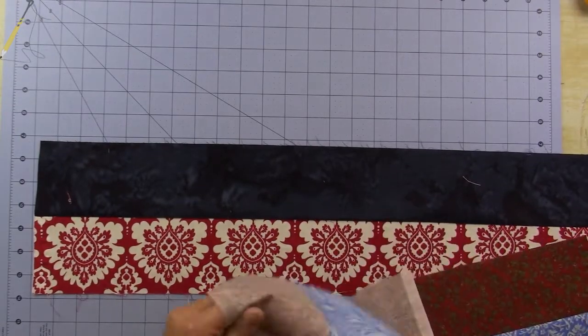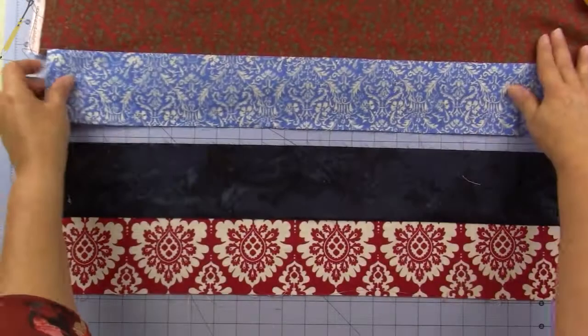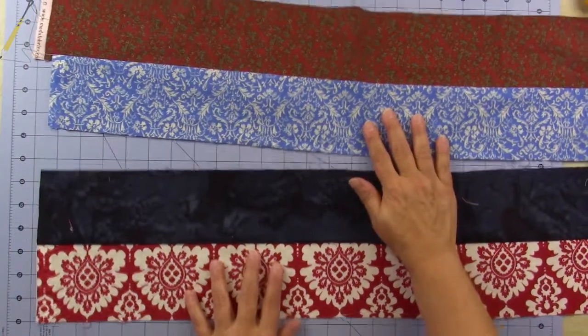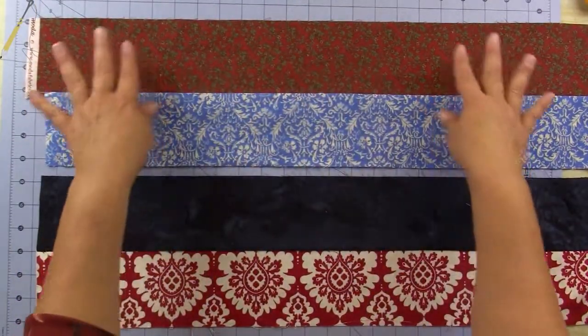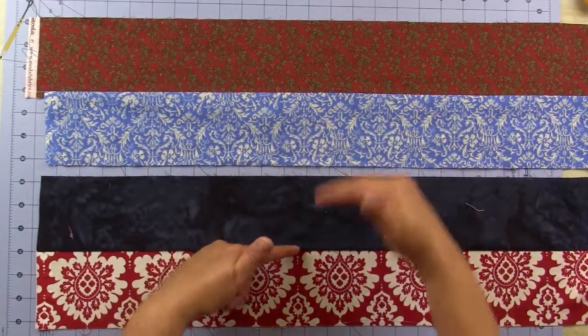If you're going to put four together, then if I were going to stitch these four together, I would stitch these two, press, and stitch these two, press, and then stitch these two together.